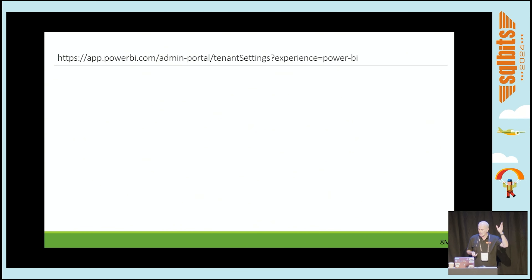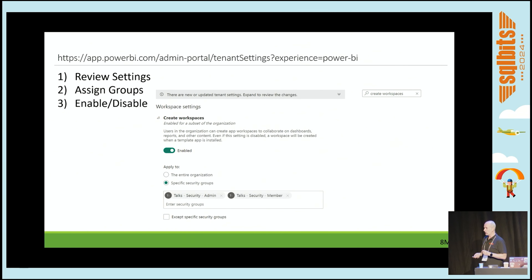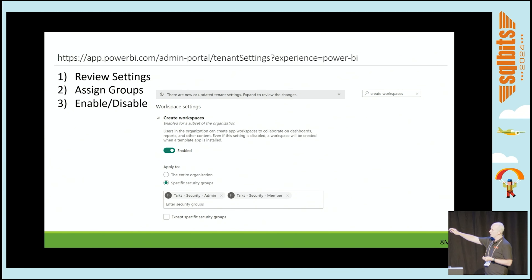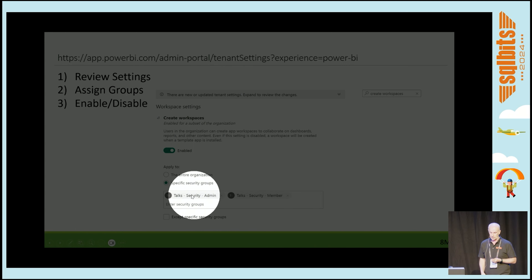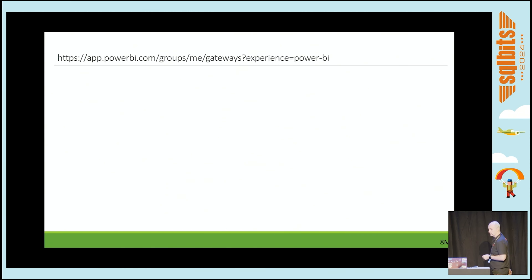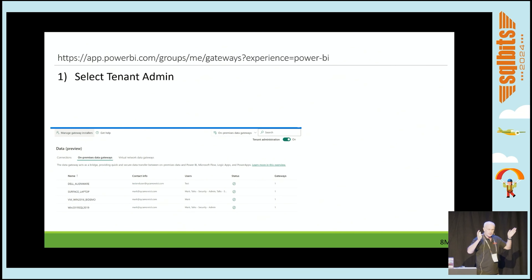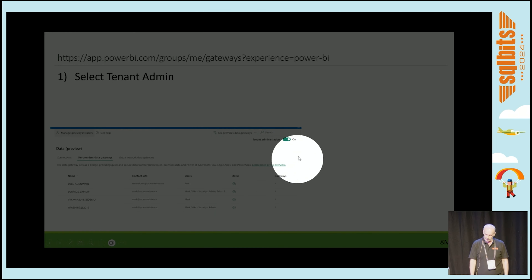From a Power BI side of things, having been made admin, you are going to be reviewing the tenant settings. Just to give you an example — workspace settings. The ability for people to create workspaces is enabled by default for the entire organization. Welcome to chaos. So we want to cut that down a little bit, but we also don't want to make the admin the one doing it for everybody. The compromise point is: we'll delegate it to a bunch of people who can actually be responsible for creating workspaces. That's just one of about 120 tenant settings we're going to be reviewing.